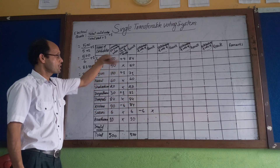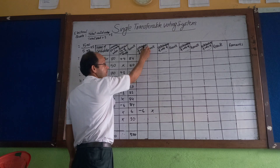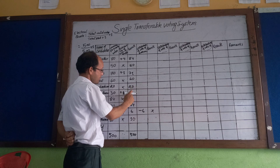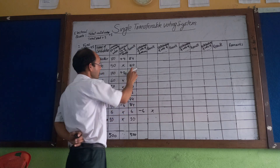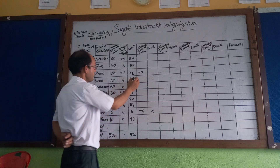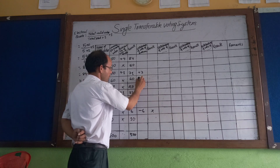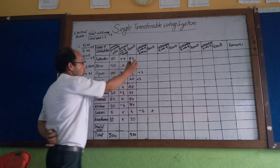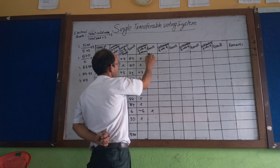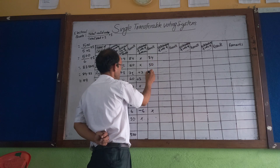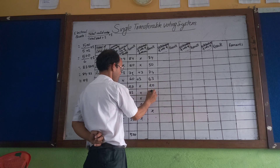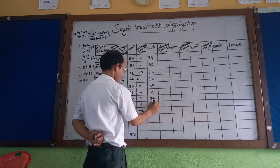Satruni's votes are distributed to the other candidates. After this distribution, three votes of Satruni go to certain members. The updated results show: 84 (elected), 50, 70, 74, 63, and so on. One candidate has already reached 84 and is elected. The total remains 500 votes.